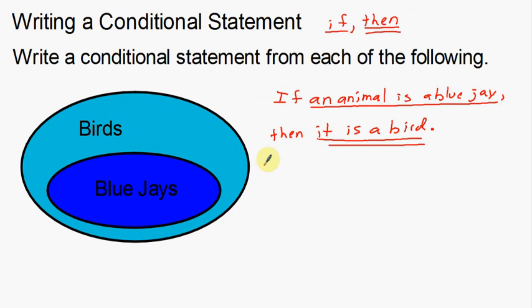If an animal is a blue jay, then it is a bird. Vice versa is not quite true — birds are not necessarily always blue jays. But that goes into the validity of the statement, which we're not worried about right now. That is writing a conditional statement — an if-then statement — with a hypothesis and conclusion. I hope this video was informative and helped.